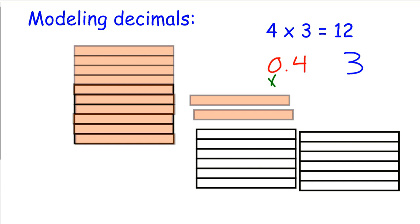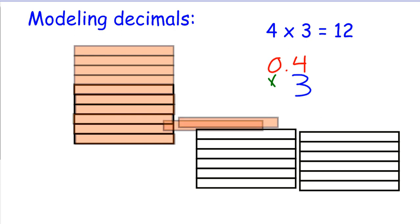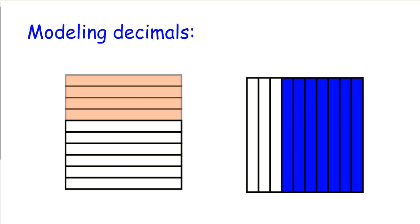So, 4 tenths times 3 is actually equal to 1 and 2 tenths. Notice the similarities, 4 times 3 equals 12, and here we have 4 tenths times 3 equals 1 and 2 tenths. See if you can make the connection when we look at this next example.